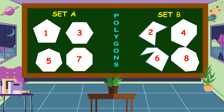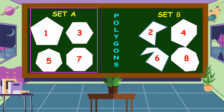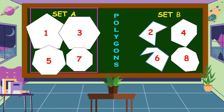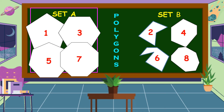Let's observe the polygons in set A. Look at the sides of polygon 1 — each side has the same length, and they have the same angles too. Observe polygons 3, 5, and 7 — their sides also have the same length.